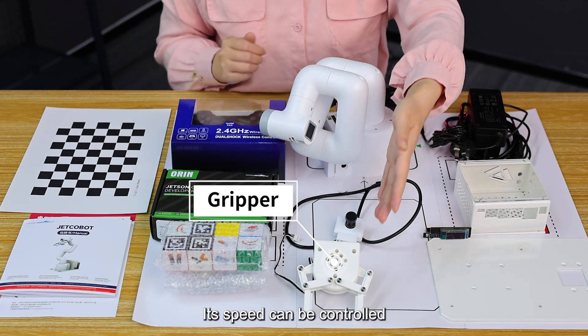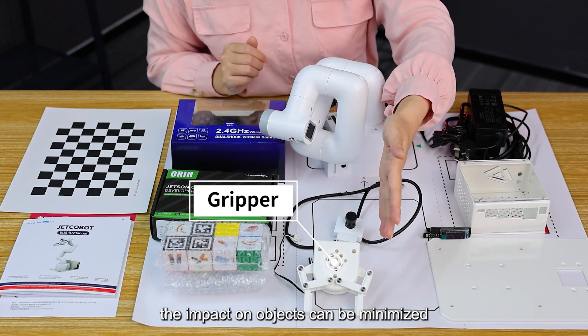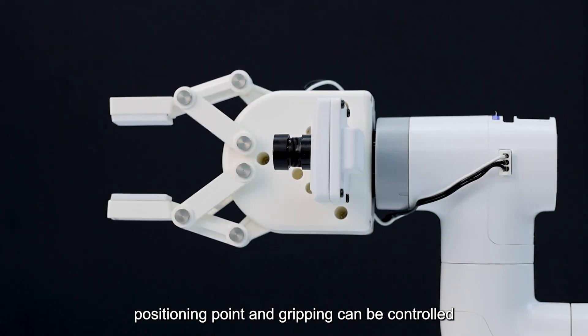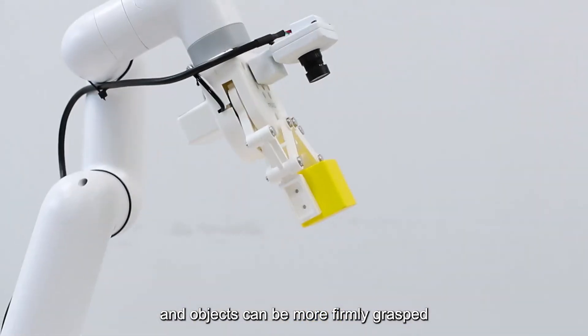This is the Gripper. Its speed can be controlled and the impact on objects can be minimized. Positioning point and gripping can be controlled, and objects can be more firmly grasped.